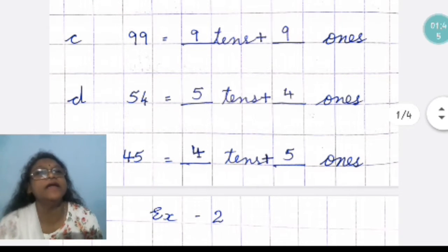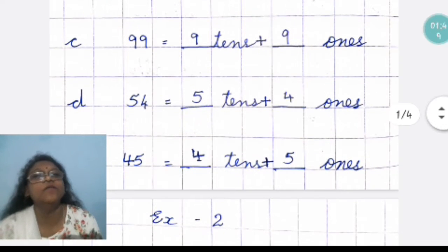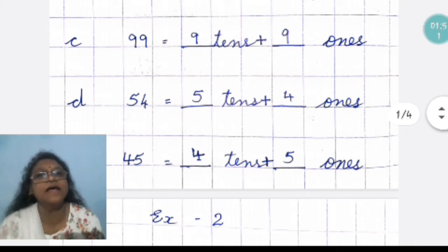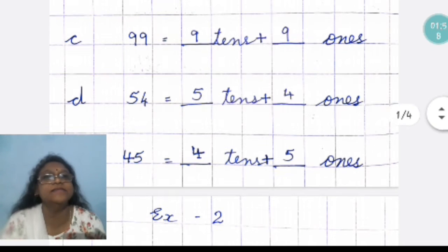Now, third number is 99. Here both the numbers are same. But, one is ones and one is tens. So, the number to the right is ones and on the left side is tens.